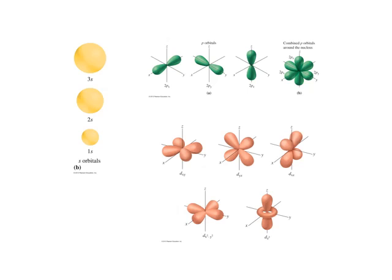After that come the p-type orbitals. These are imagined in terms of Cartesian coordinates to occupy the x, y, and z axes, and added together they also come up with roughly a spherical arrangement about the nucleus.